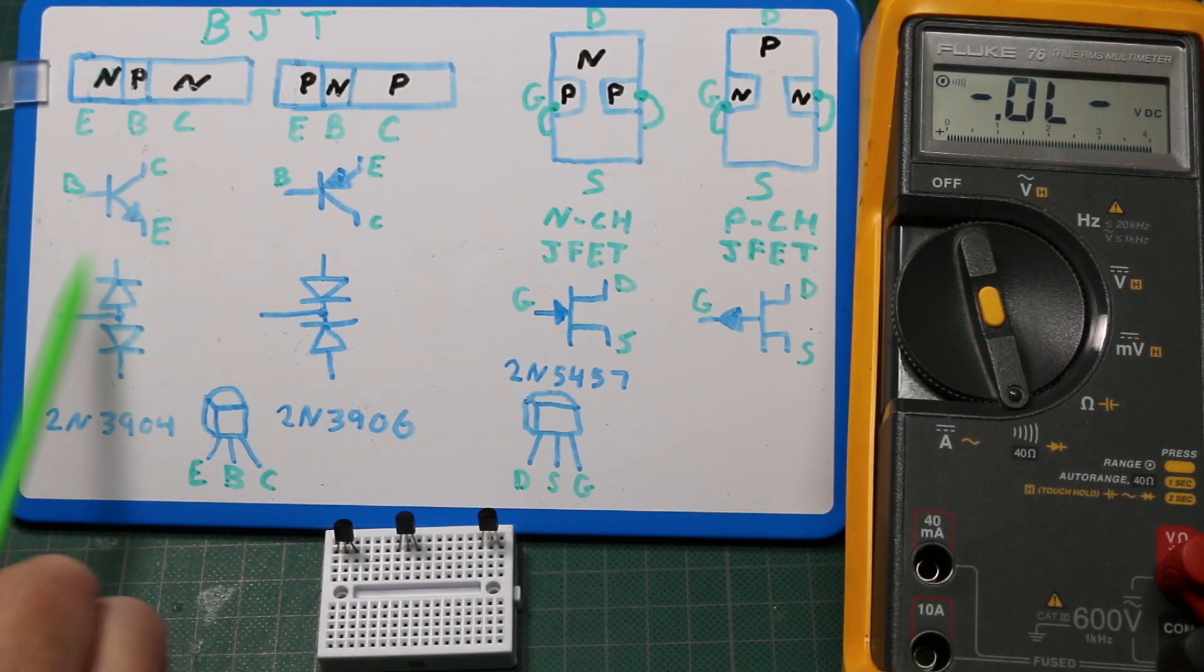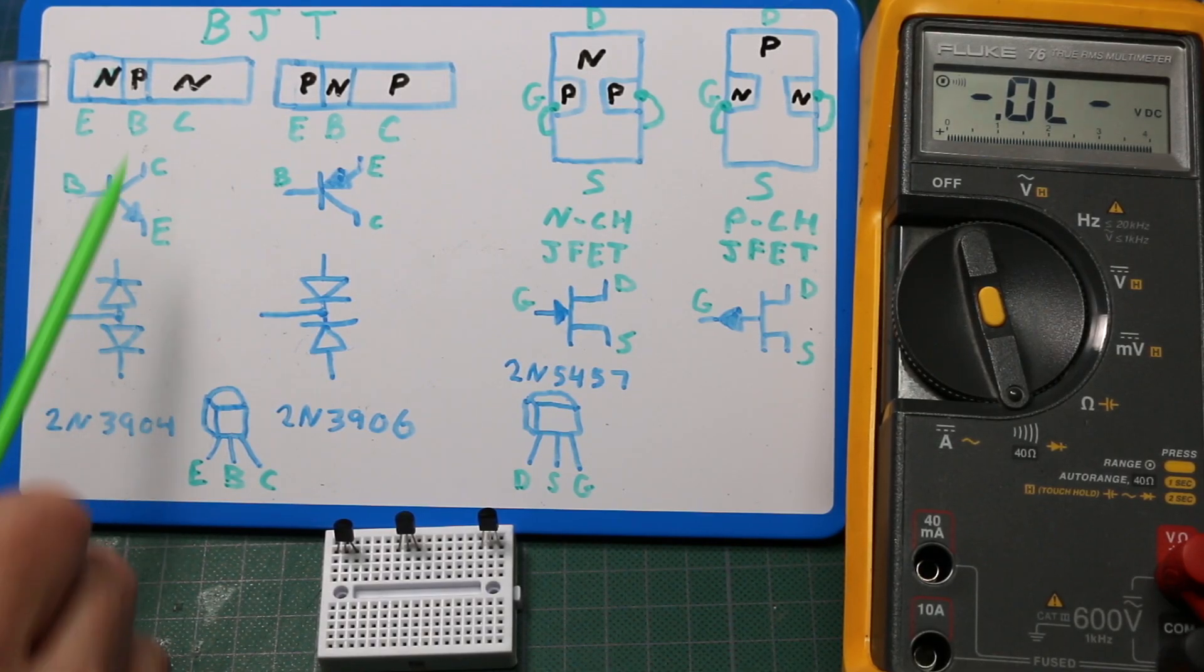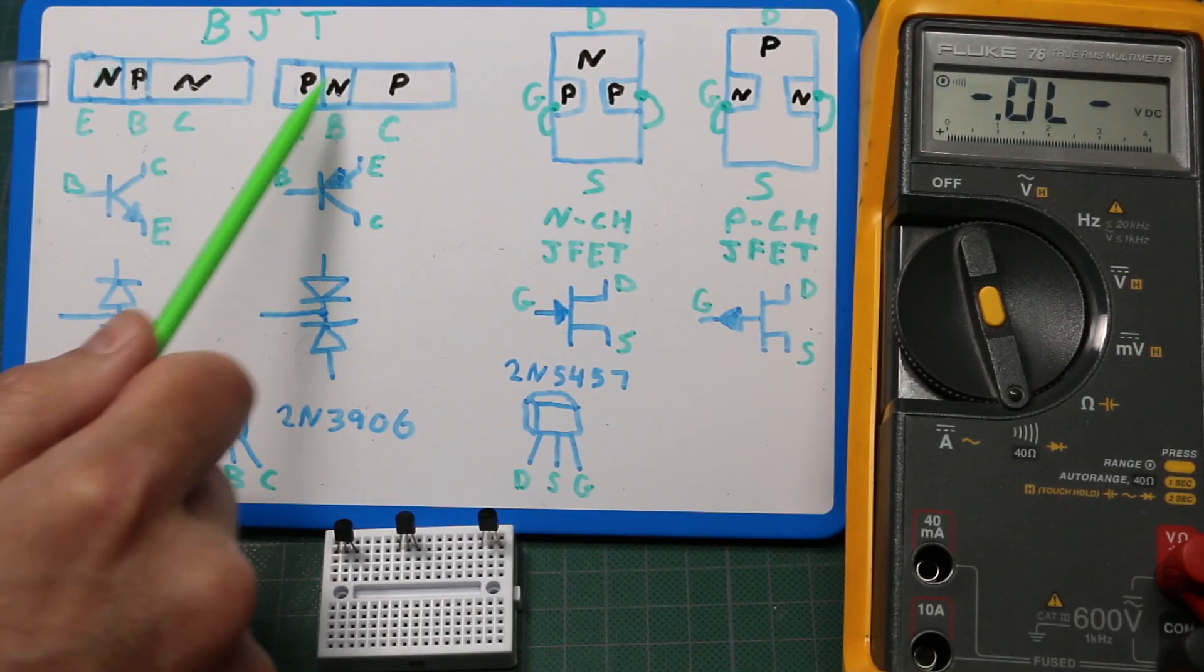And if we then reverse the leads, we should see no conductivity because it's a reverse bias diode. And that will tell us the PN junctions are intact, and we'd reverse the leads to check PNP.